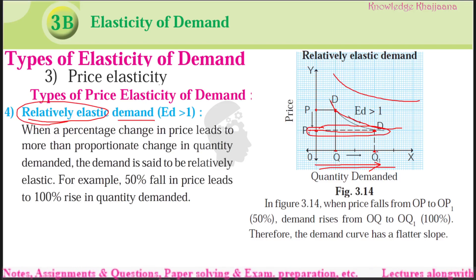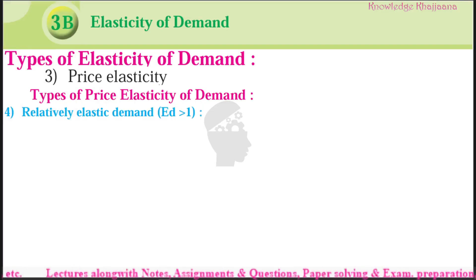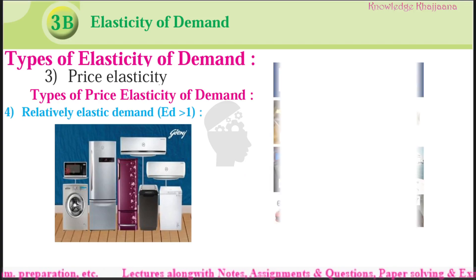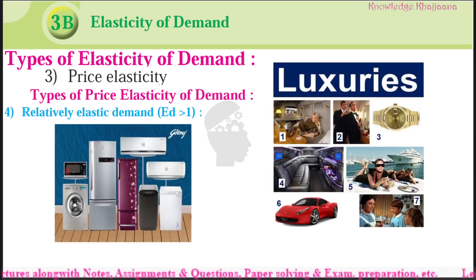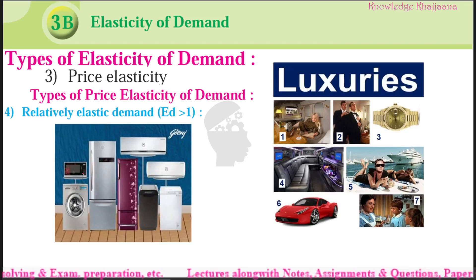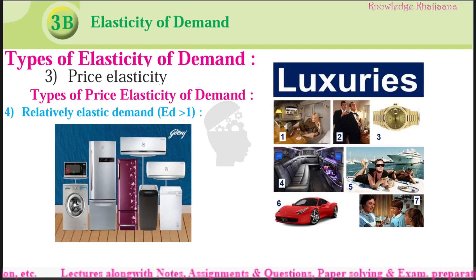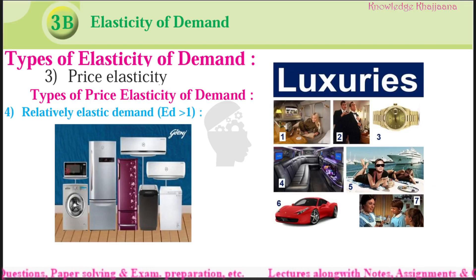This happens with luxury goods or comfortable goods — TV, refrigerator, washing machine, AC, air travel, or luxury commodities. If there is decrease in the price by any percent, there is more change in the quantity demanded. Demand is relatively elastic compared to the change in price, and the demand curve has a flatter slope.